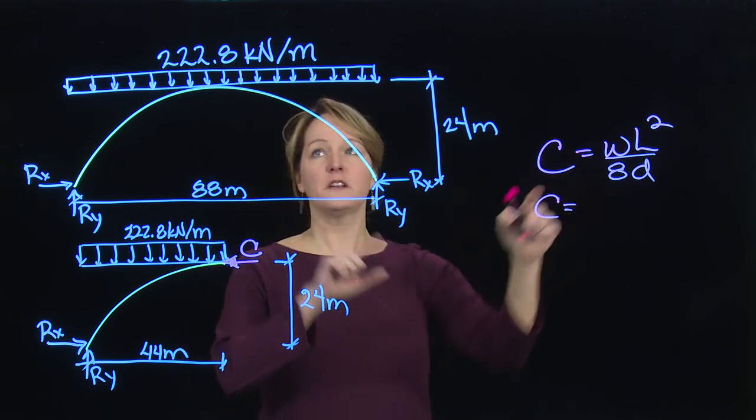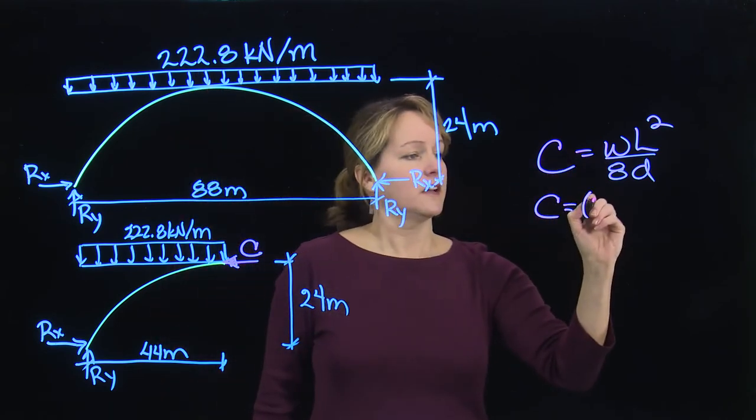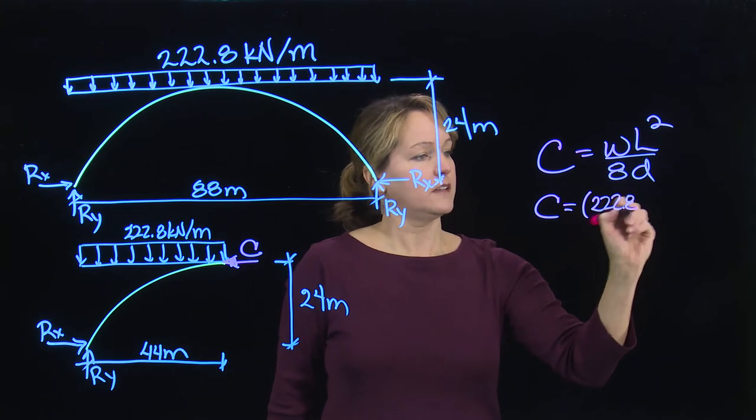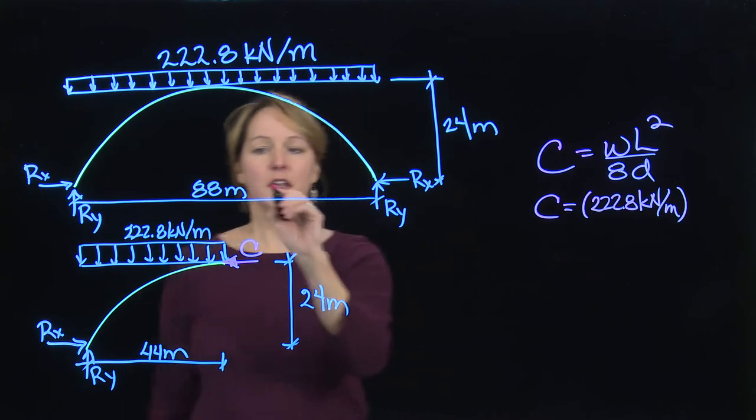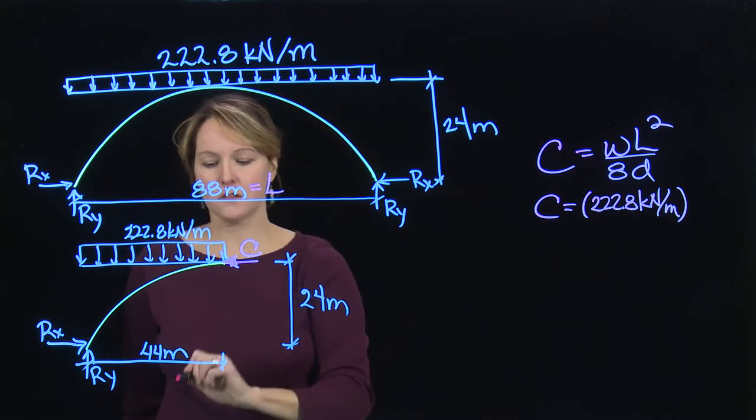We should be able to calculate this compression force. W is my distributed load, so that is 222.8 kilonewtons per meter. The length, I use my full length since that's what the equation was assuming.